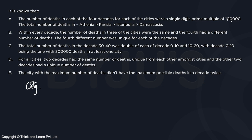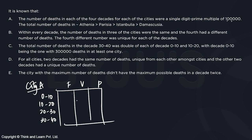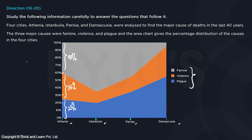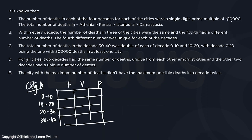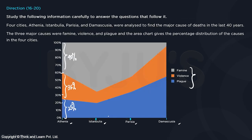For a particular city, say city A, we need two things: first, the breakdown by cause — famine, violence, or plague — and second, how many deaths occurred in each decade. For example, if total deaths in city A is represented as 'a', then 25 percent of 'a' is due to plague, 35 percent due to violence, and 40 percent due to famine.